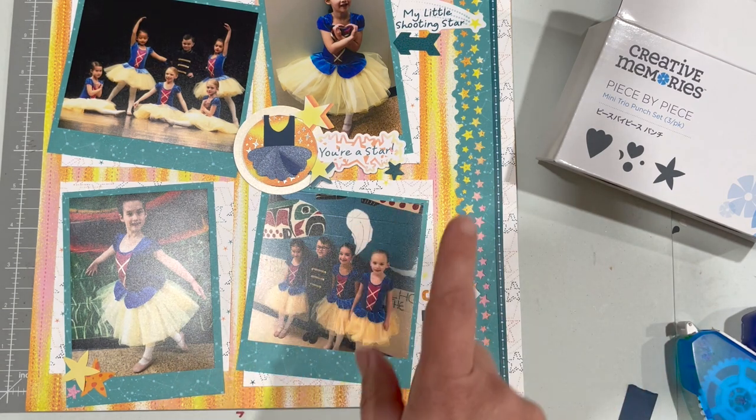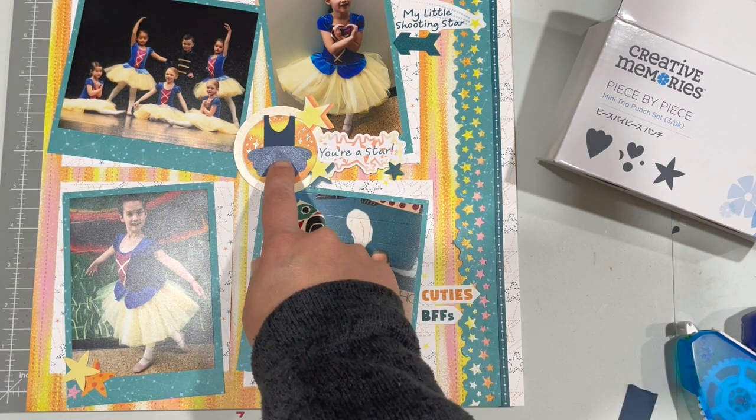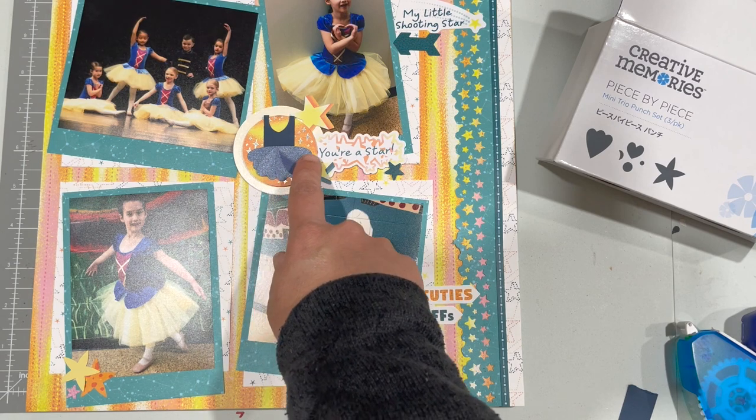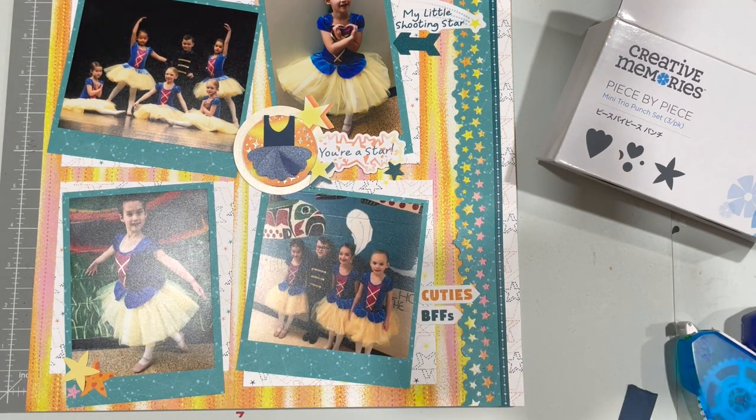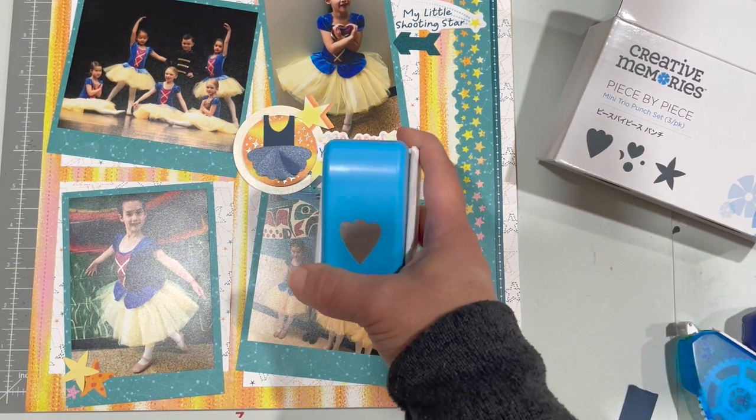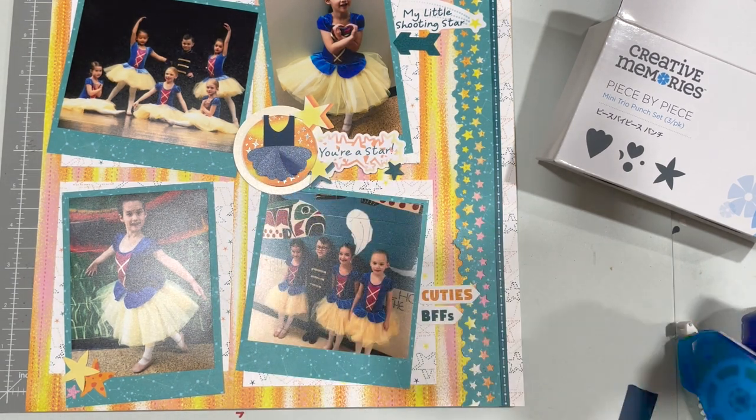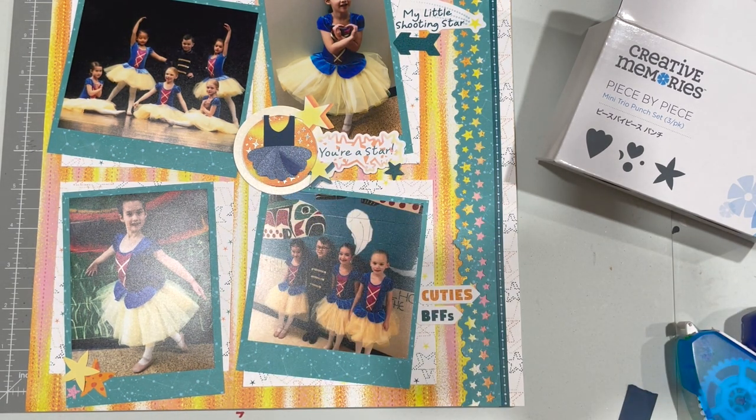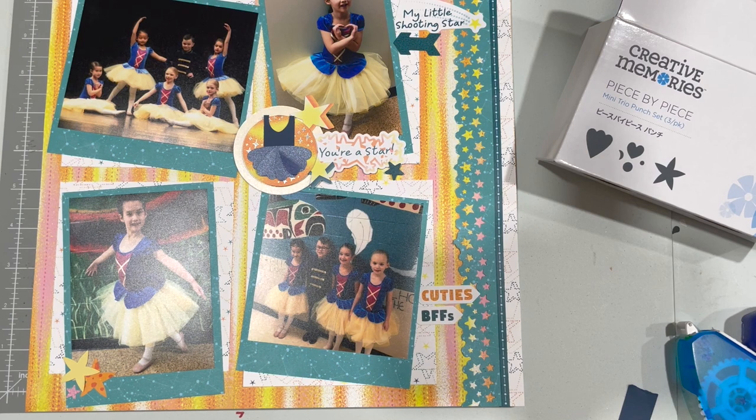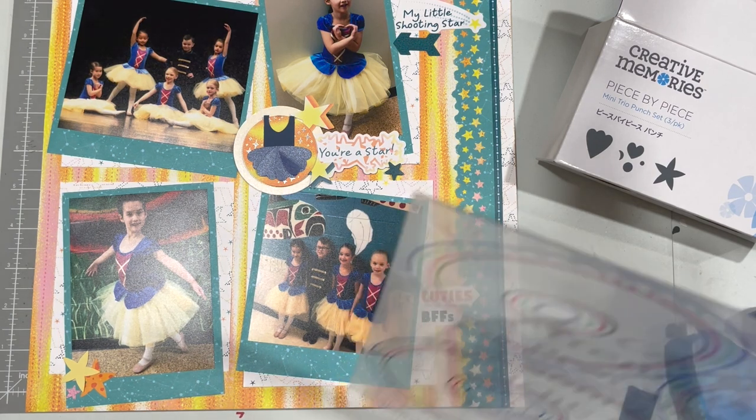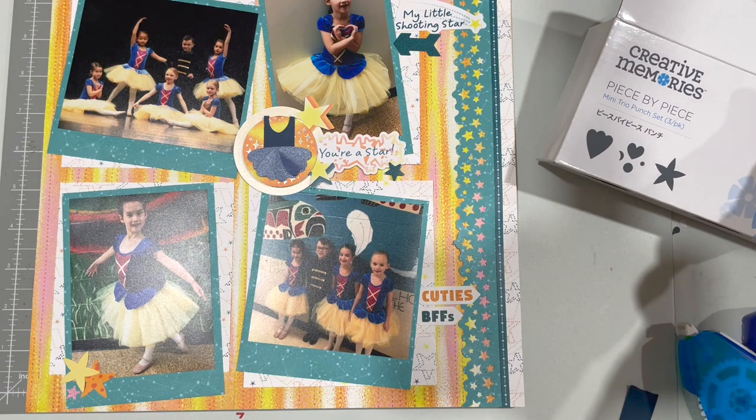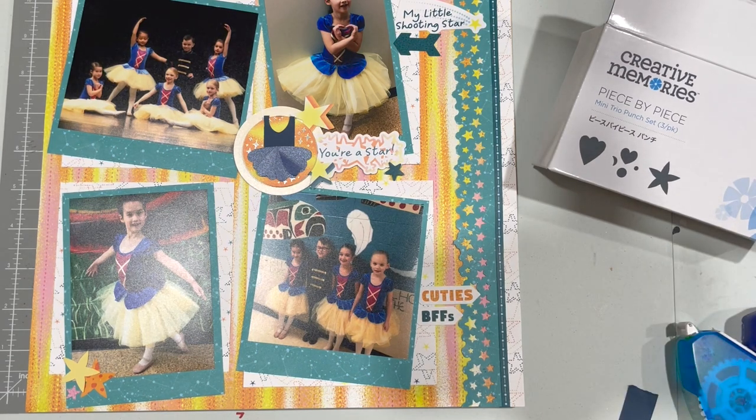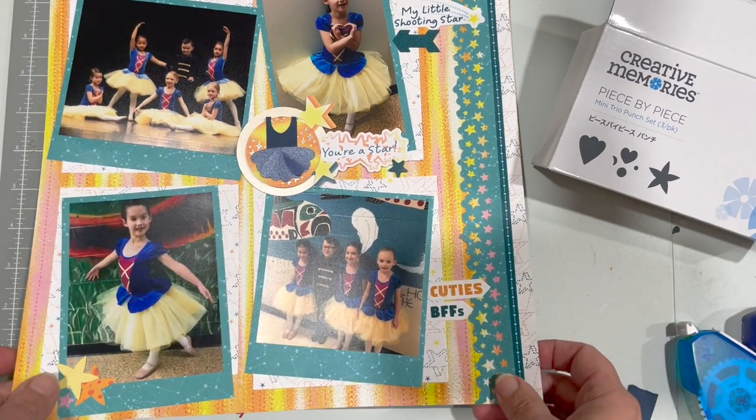I did a little tutu with the punch and I used the little petal one to create the bottom of the tutu and for the top I just used a strip of paper and used the oval from the custom cutting system. So I'm just going to go ahead and show you how I did that quickly.